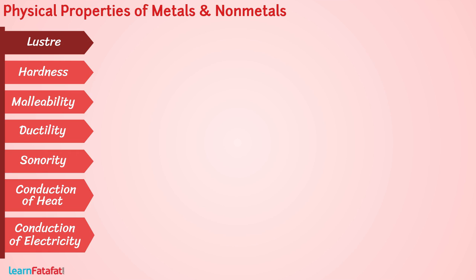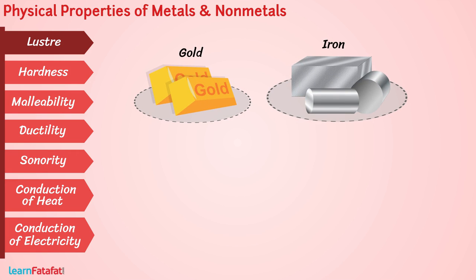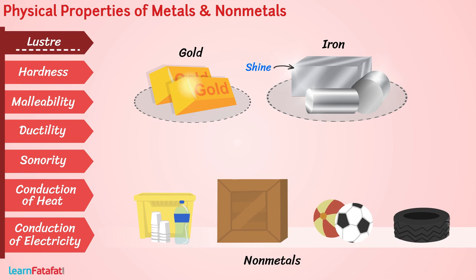Lustre: All metals in the pure state have a shining surface. This property is called metallic lustre. Non-metals, on the other hand, are dull and do not have lustre.